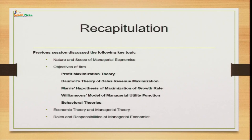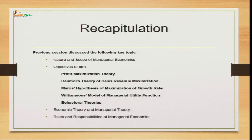Then we talked about Williamson's model of managerial utility function. As we have seen in the modern organization, management separates from ownership, and management wants to increase their utility in terms of better working advantages, environment, perks, and compensation other than salaries. They try to increase their utility while satisfying shareholders by maintaining minimum profits.